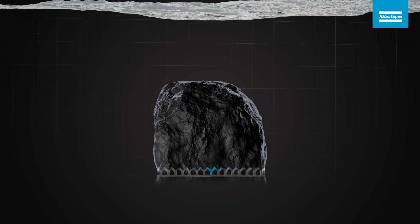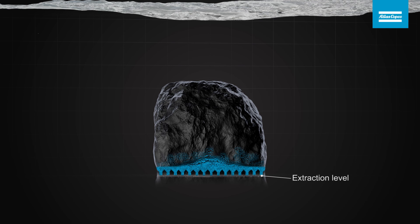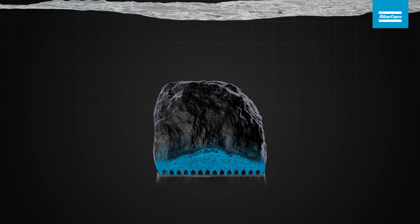By drawing rock from the extraction level in the lower part of the mine, a gap is created. Absence of support for the overlying rock mass, together with rock stress and gravity, will cause the rock mass to cave.